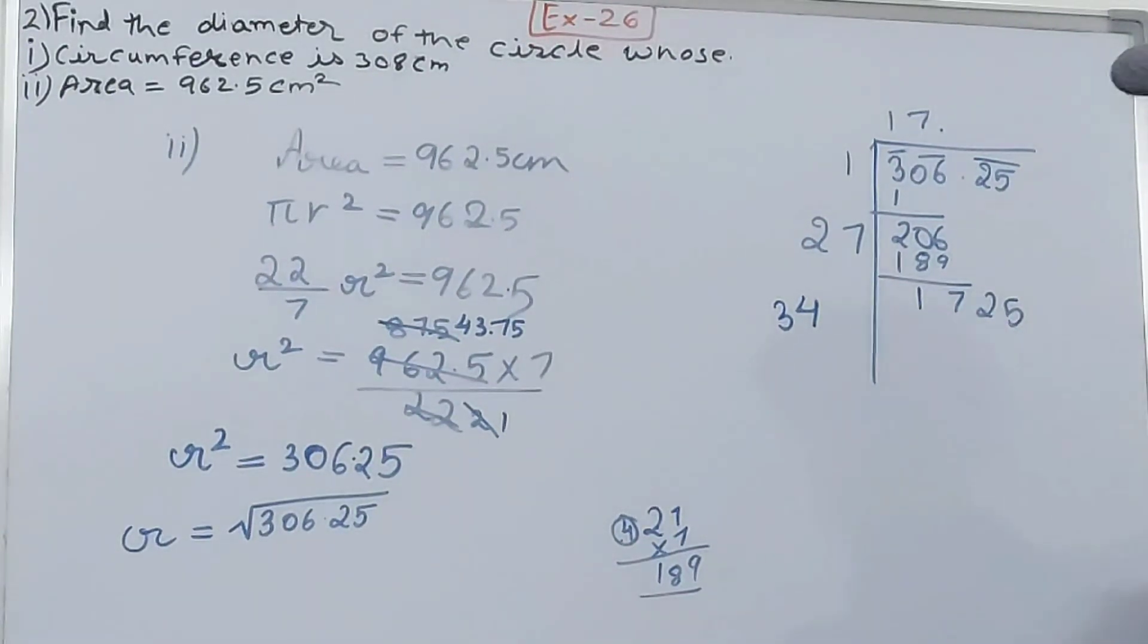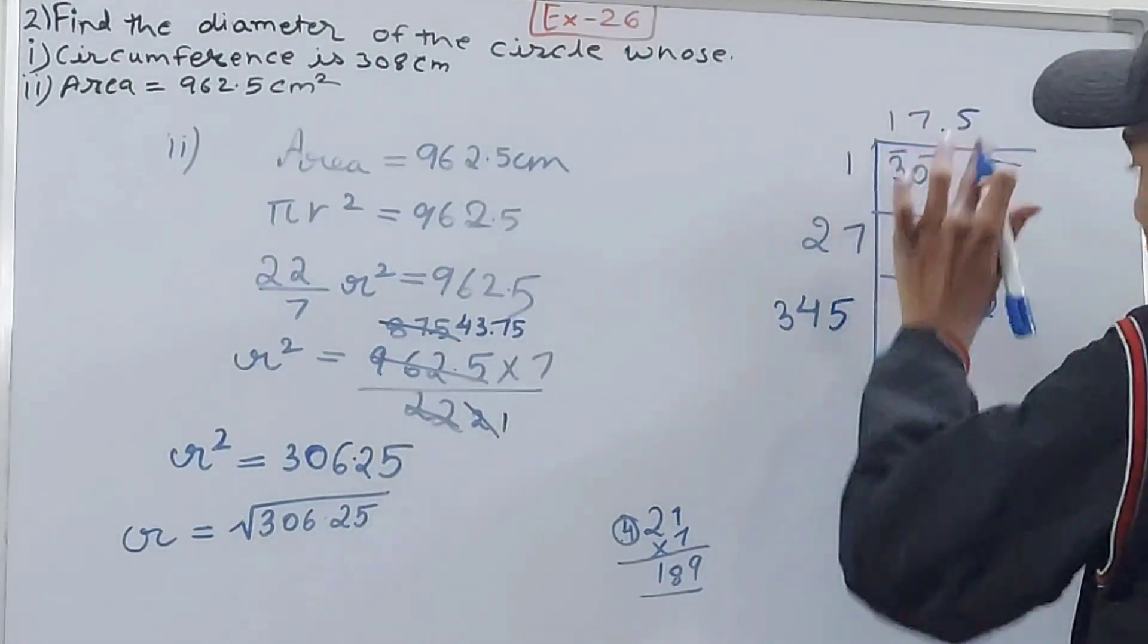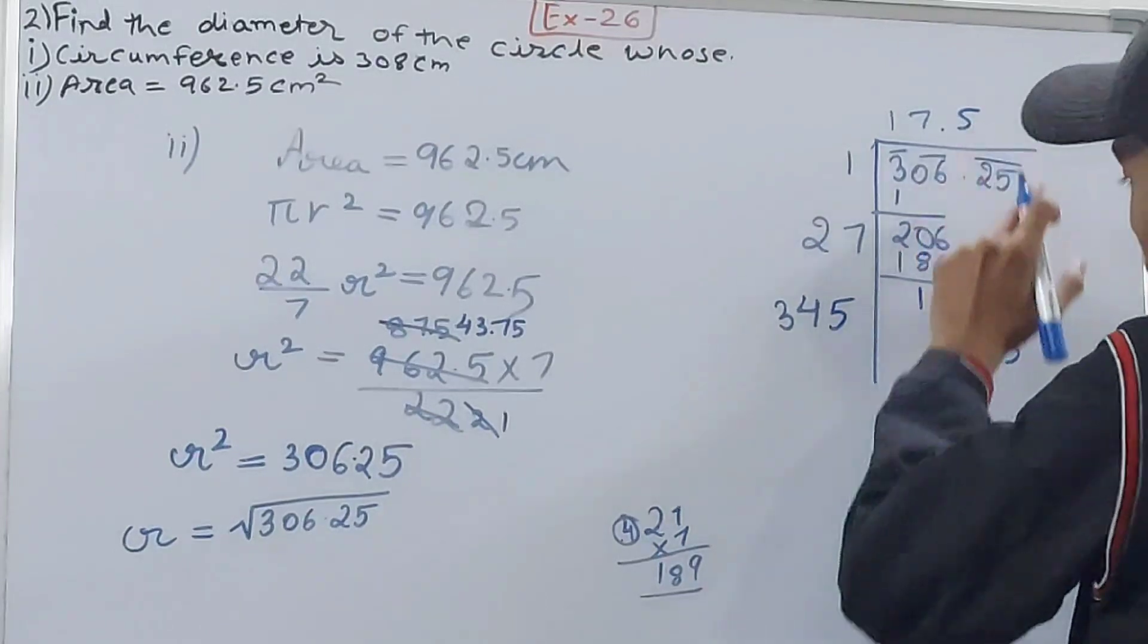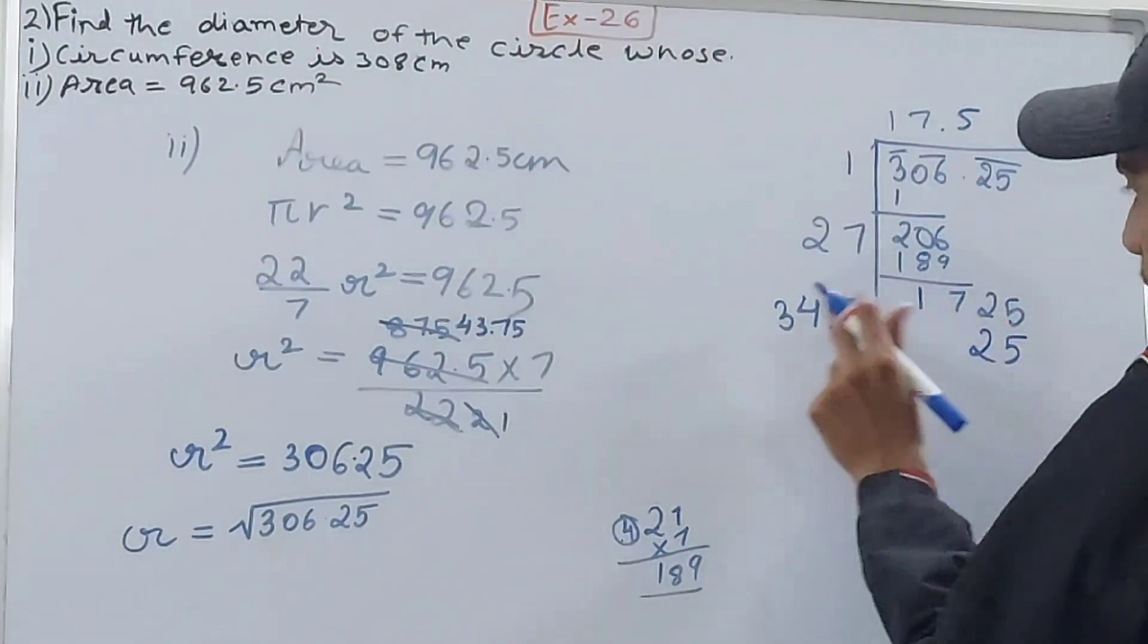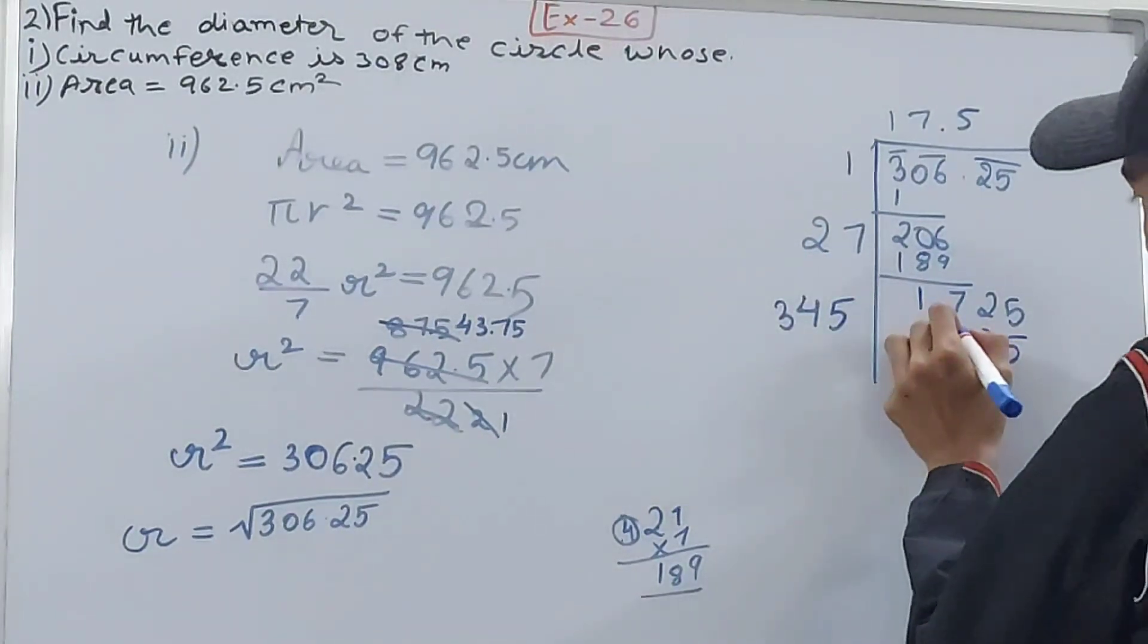5 × 5 is 25, and 2 carried over. 5 × 4 is 20 and 2 is 22, so 2 and 2 here. 5 × 3, that's 15 and 2, so that's 17. So 0, 0, 0.